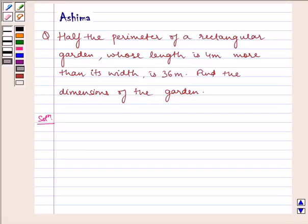Hello and welcome to the session. Let us discuss the following problem today. Half the perimeter of a rectangular garden whose length is 4 meter more than its width is 36 meter. Find the dimensions of the garden.